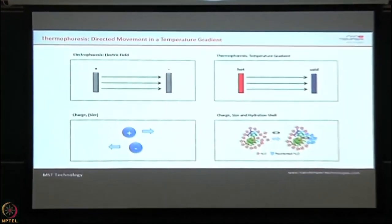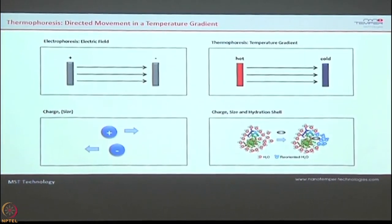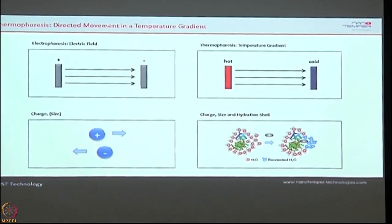This is called Microscale Thermophoresis — in short form, MST. Before going into the details, I want to elaborate on the basic principle. We all know electrophoresis — in an electric field, ions or molecules move based on their sizes if there is a gradient like in an acrylamide gel. Similarly, thermophoresis is the movement of molecules in a temperature gradient: thermo means temperature, phoresis means movement. This thermophoresis is sensitive to three things: size, charge, and the hydration shell.